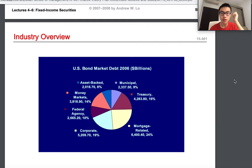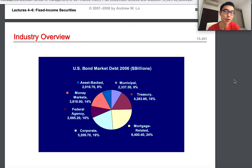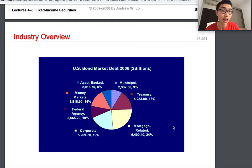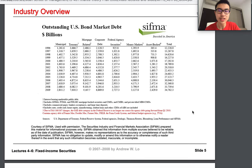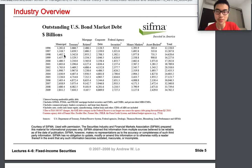Here is a market depth chart from 2006. If you look at it, most of the market is mortgage-related, and the second-largest slice is corporate. We also have treasury, federal agency, money market, asset-backed, and municipal. You can find this kind of data on SIFMA or Bloomberg — it's a diagram showing the differences in how many particular assets are issued in the United States.